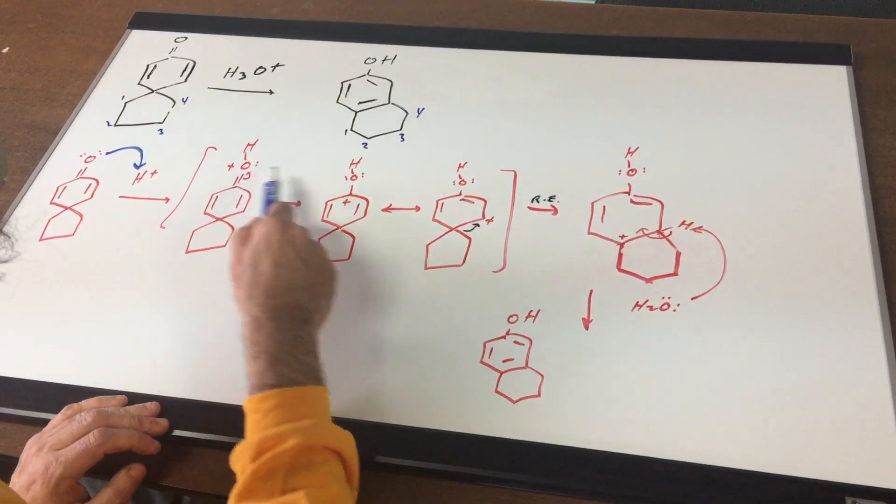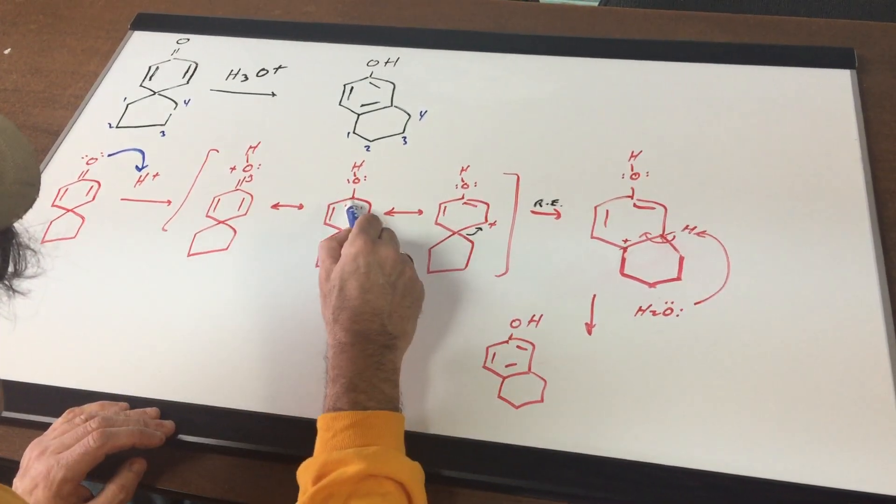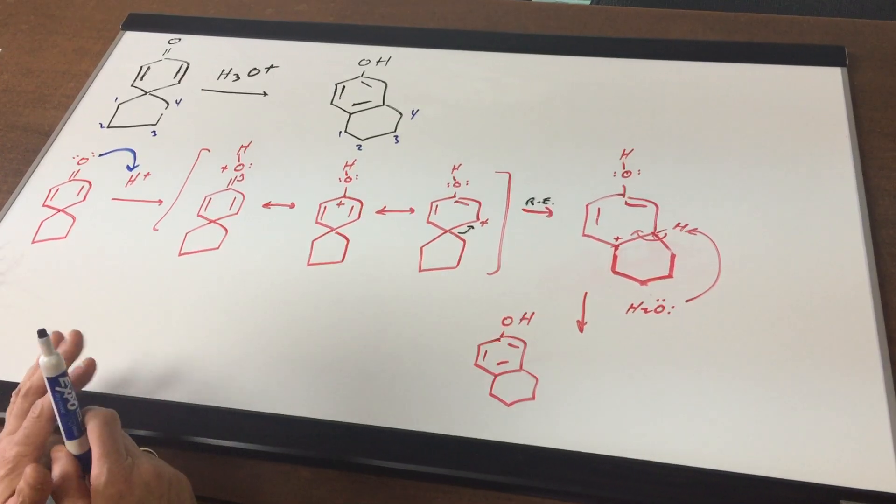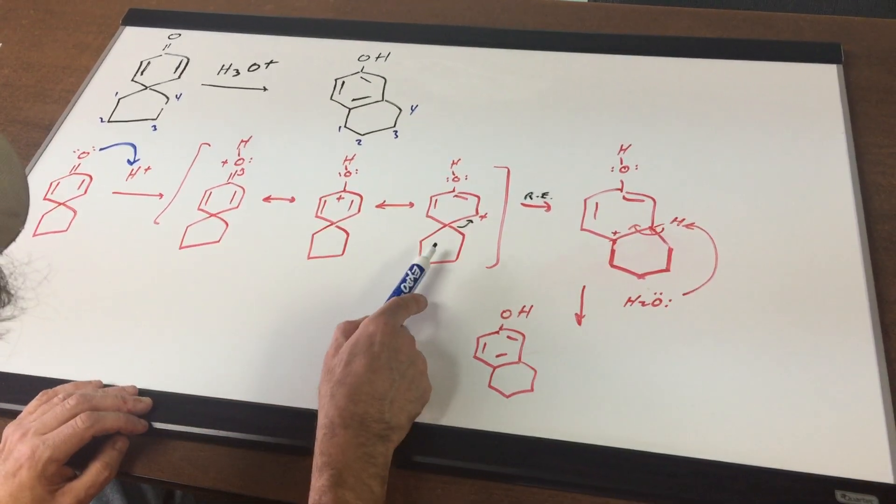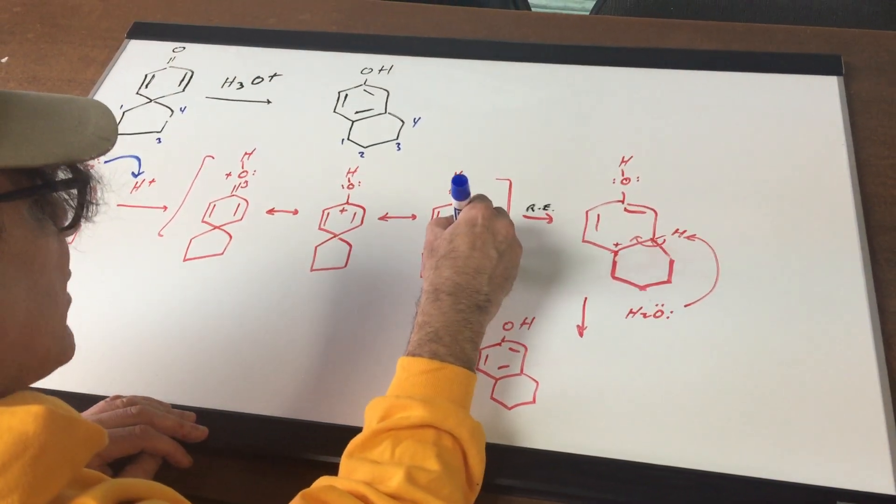As you can see if you move this to here that gives you this carbocation and then if this bond moves over this gives you this carbocation. Now I think you can see of all these carbocations you have your opportunity right here.